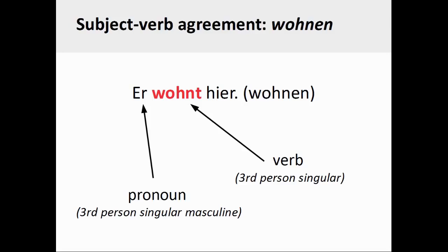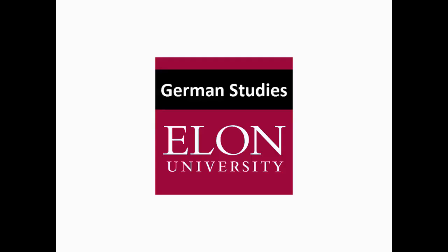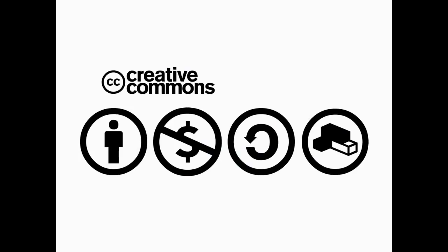This concludes the presentation on German infinitive verb forms and the present tense conjugation pattern of German verbs. Be sure now to test your knowledge by completing the related online course activity. Wege in den Beruf is a production of German Studies at Elon University. The course is released under a Creative Commons Attribution Non-Commercial Share Alike 4.0 International License. Don't be a square — remix and share.